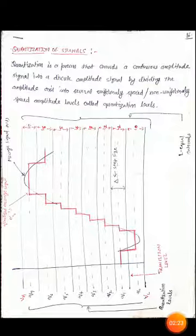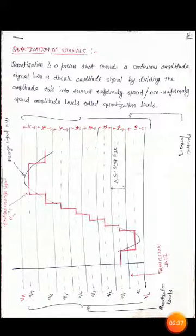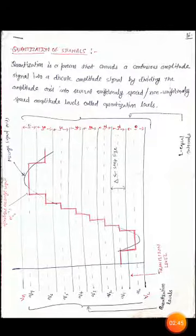When the message signal moves from L1 to L2, the quantization level changes from Q0 to Q1. And when the message signal moves from L1 to L2, the quantization level changes from Q1 to Q2. In this way, the continuous amplitude signal is divided into a number of discrete amplitude levels, which is generated by this staircase signal shown in red ink.